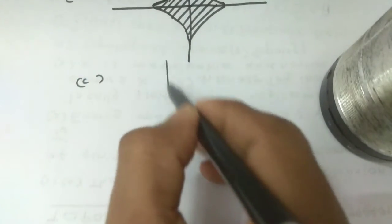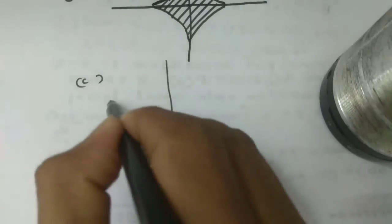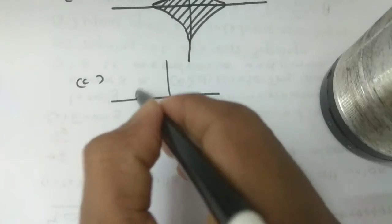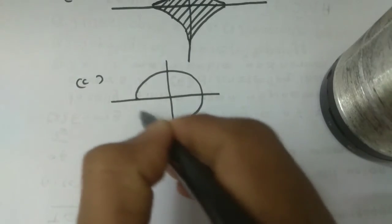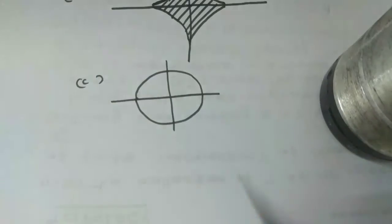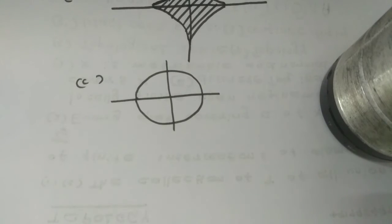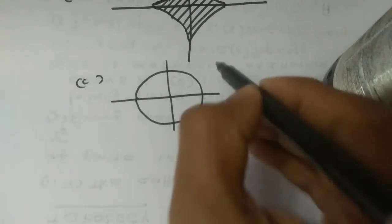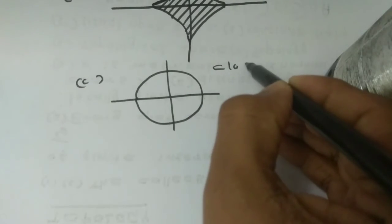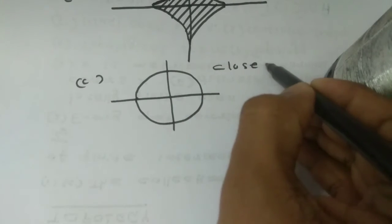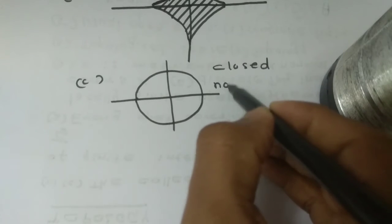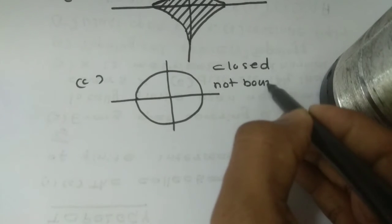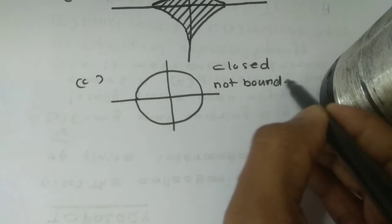We have to write the x-coordinate and y-coordinate. We will write the closed surface. The value is equal to 1, greater than 1. So the value is equal to 1, so this is closed.